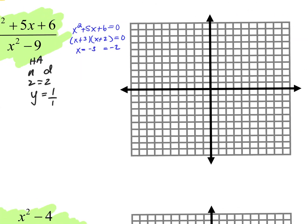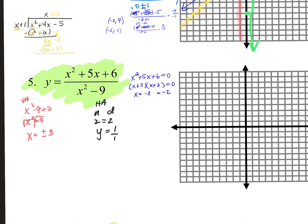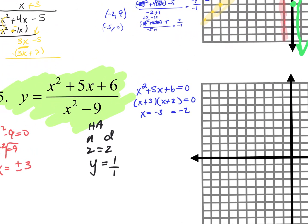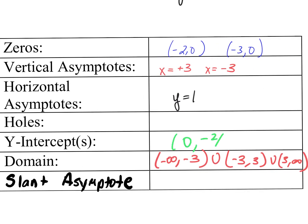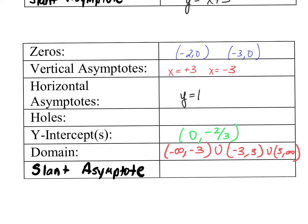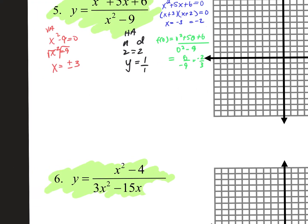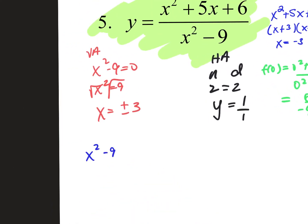How do you find the y-intercept? Set all x's equal to zero. f(0) equals 0 squared plus 5 times 0 plus 6 over 0 squared minus 9, which is 6 over negative 9, or negative 2 thirds. So my y-intercept is at (0, negative 2/3). Let's find our slant asymptote. How? Long division. X squared goes into x squared one time — so there is no slant asymptote; we write none.